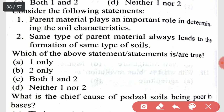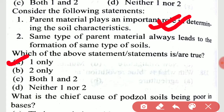Consider the following statements. Parent material plays an important role in determining the soil characteristics. Number 2: same type of parent material always leads to the formation of same type of soil. Which of the above statements is true? It is one only — statement 1 is true, but 2 is not true.